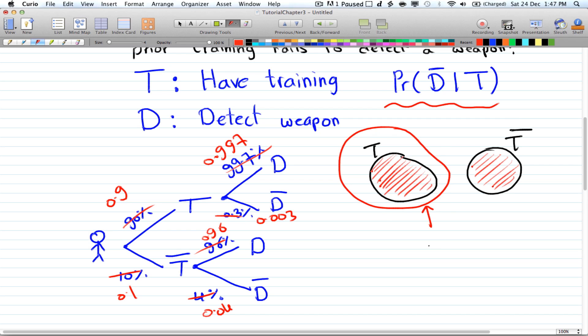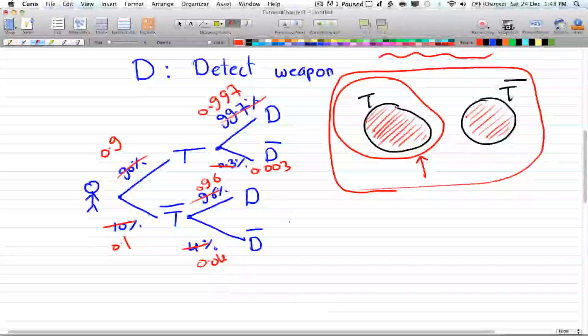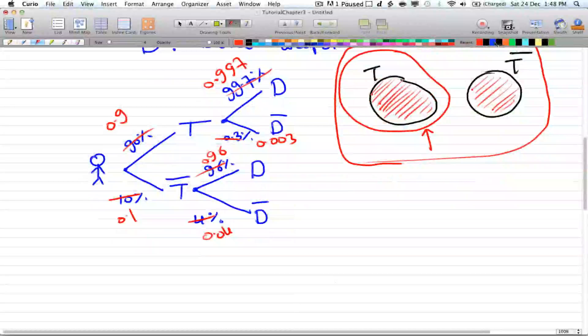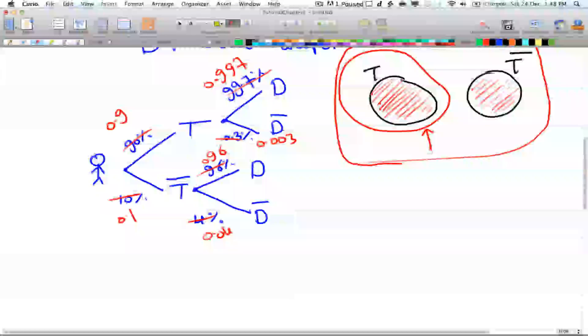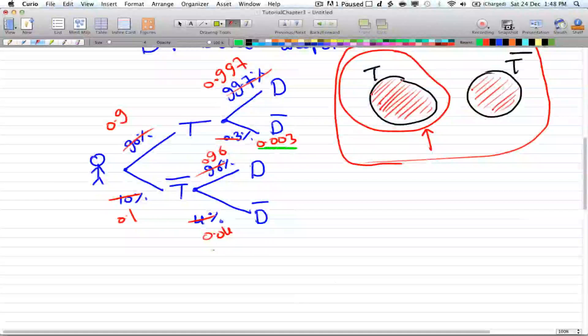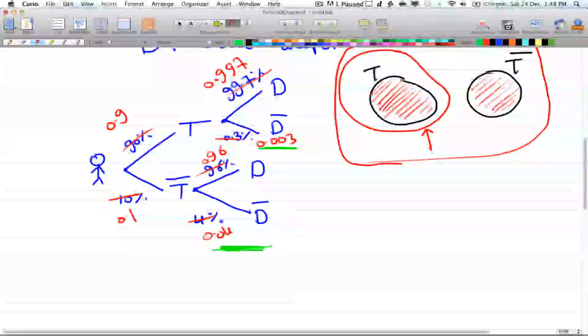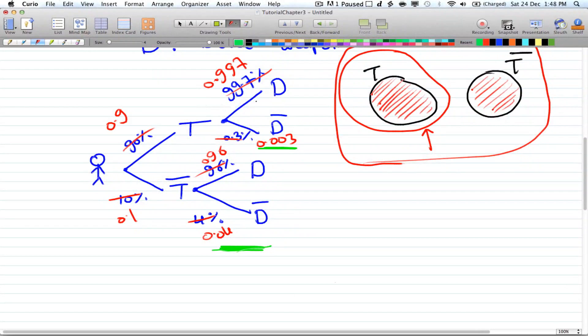Okay, so you just want to find the probability that someone is in this circle out of all of it. So you want to find someone in here. But remember that the whole population for failing to detect a weapon is in here.